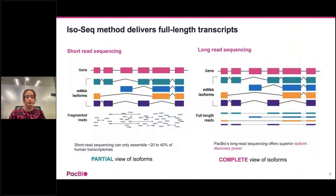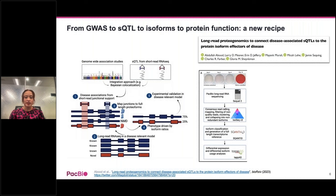GWAS has revealed many loci associated with splicing, while short-read RNA-Seq has helped identify splicing QTLs that co-localize with GWAS loci, but these alone cannot provide isoform-level information. In this study, researchers used bulk isoSeq to characterize isoform expression changes associated with bone mineralization in a human fetal osteoblast system. They combined GWAS, sQTL, mass spectrometry, and bulk isoSeq to infer the effects of splicing QTL on protein isoforms, analyzing data across four time points using SmartLink, SQANTI3, and TAPAS.